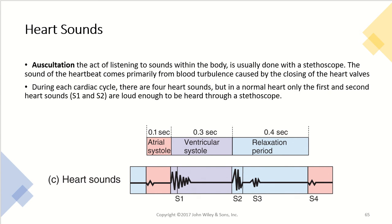Moving on to heart sounds: auscultation is the act of listening to sounds within the body, typically done with a stethoscope. The sound of the heartbeat comes primarily from blood turbulence caused by the closing of the heart valves. During each cardiac cycle there are four sounds, but in a normal heart only the first and second sounds — S1 and S2 — are loud enough to be heard through a stethoscope.